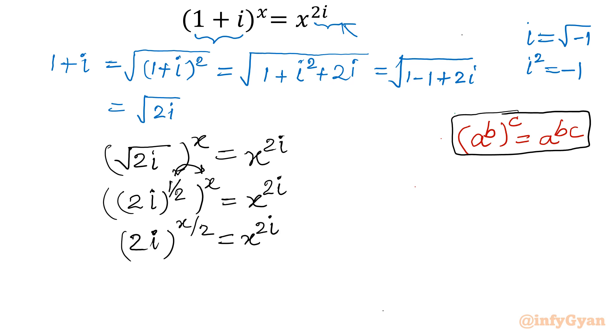Right-hand side is unchanged as it is x power 2i. Now if you want to derive one expression or simplify, you can go for, or otherwise directly we can take log. That would be much better. So let us consider log both sides.